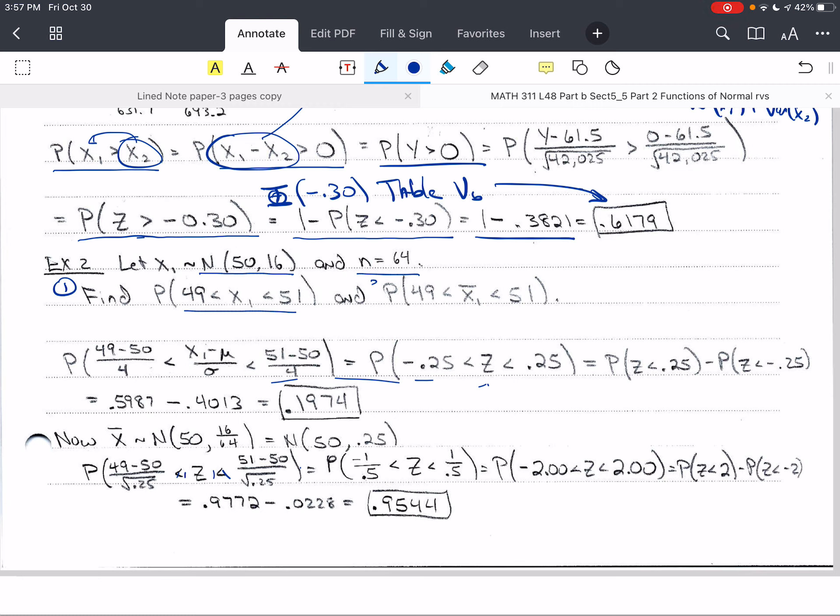And then we want to find that x-bar₁ is between 49 and 51. So we want to compare these.